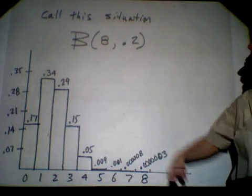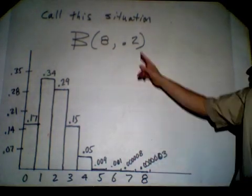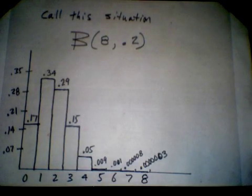And the first number would be N, the number of trials which is known, and point two, which would be the probability of success.